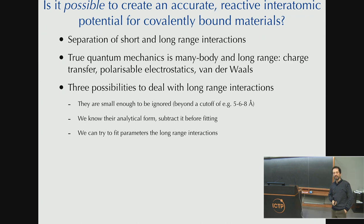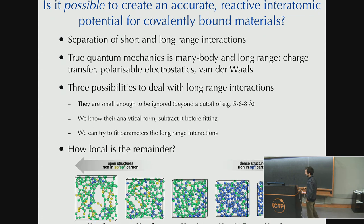And really, there are three things that one can do with those long-range interactions. Either we study systems in which those are small enough that we can ignore them and still get methods and potentials that are very useful, and most of this talk will be about such systems. One could say we have analytic forms of some of those interactions. So a point-charge Coulomb model may be good enough for what we want to do, and we subtract them before the fitting process and add it back afterwards.